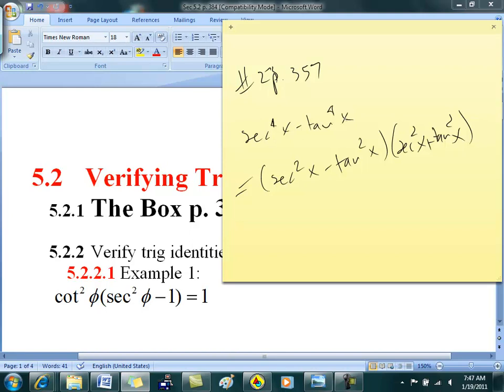Does anybody know any identities that relate secant squared and tangent squared? Yeah, Mandy? 1 plus tangent squared x. Okay. So secant squared x minus tangent squared x is equal to what then? Fantastic. So this is equal to 1. So then this is secant squared x plus tangent squared x. Is this one of the choices? F.